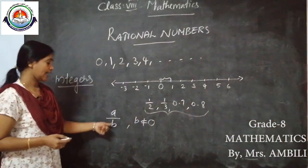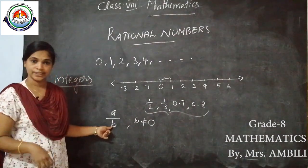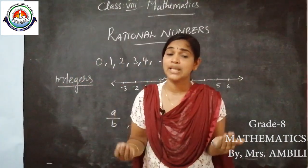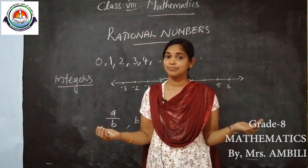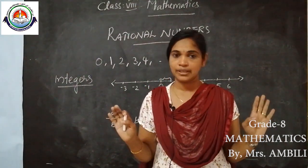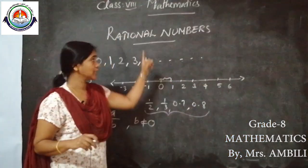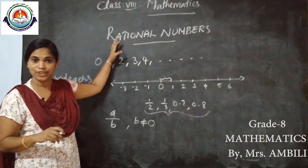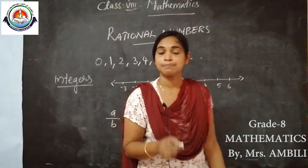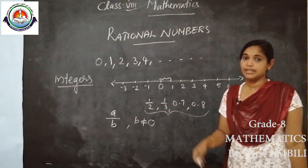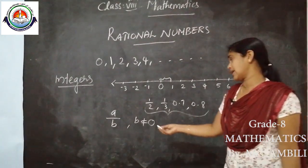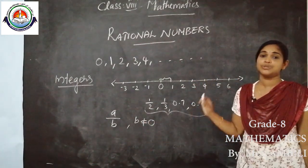So A and B are any two integers and B is not equal to 0. If B equals 0, what will happen? Division by 0 is not defined. So what is a rational number? A number that can be expressed in the form of A by B where A and B are integers and B is not equal to 0.